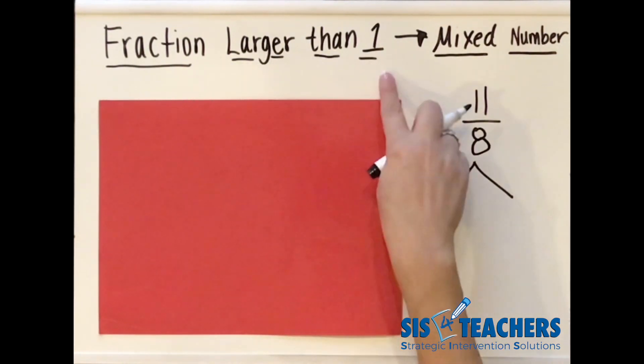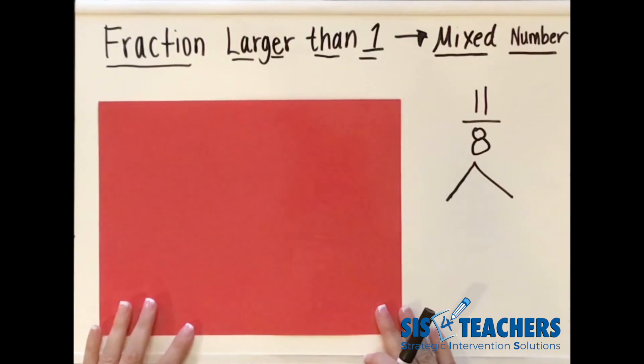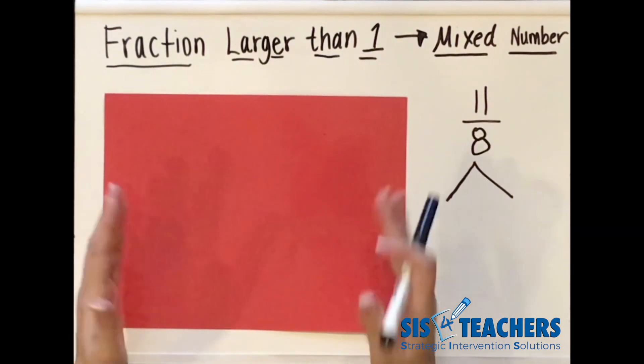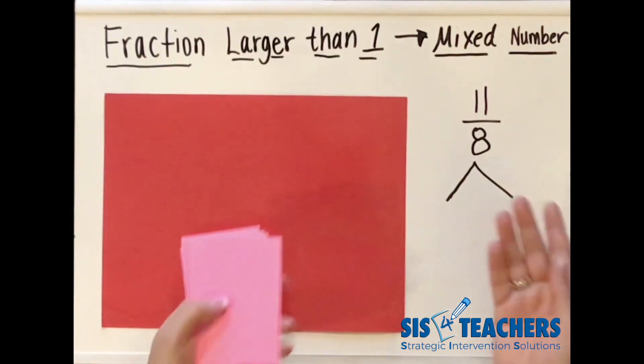If it's a fraction larger than one, what is the whole? The whole in this case is eighths. So if I wanted to pull out a whole, it should be equal to eight eighths. I'm going to use my red sheet here in my colored area model papers, and I'm going to get out 11 eighths.